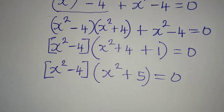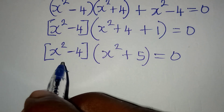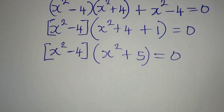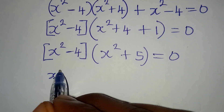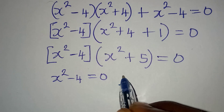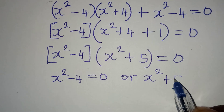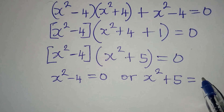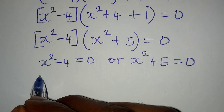In the other bracket I have x squared plus 5 — since 4 plus 1 is 5 — equal to 0. Now I can apply the zero product rule, meaning that either x squared minus 4 equals 0 or x squared plus 5 equals 0.